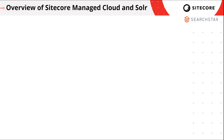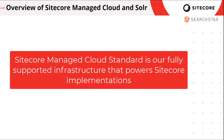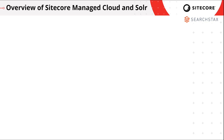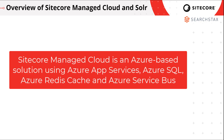Sitecore Managed Cloud Standard is Sitecore's fully supported infrastructure solution that powers Sitecore implementations. There are a couple of varieties of Managed Cloud — there's Managed Cloud Premium, and Managed Cloud Standard, which is an Azure-based solution primarily using Azure App Services as the method of running websites for Sitecore. It also uses Azure SQL for data storage and persistence, Azure Redis Cache for session state, and Azure Service Bus as a message infrastructure.